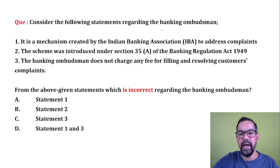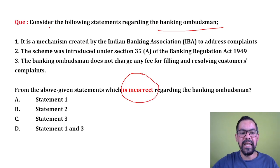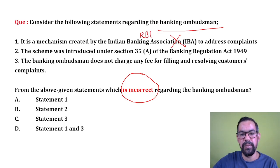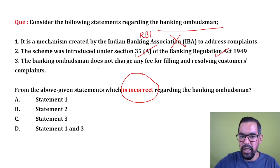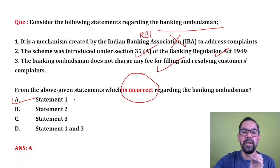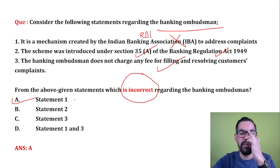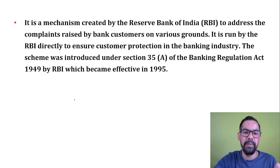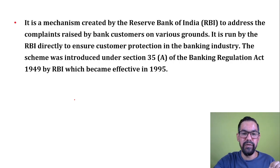Next question: Consider the following statements regarding Banking Ombudsman and find the incorrect one. Statement 1: It is a mechanism created by IVI — this is incorrect; it is created by RBI. Statement 2: The scheme was introduced under Section 35A of Banking Regulation Act 1949 — correct. Statement 3: Banking Ombudsman does not charge any fee — correct. So Statement 1 is incorrect, making option A the right answer.